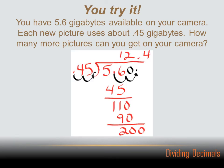You have 5.6 gigabytes available on your camera. Each new picture uses about .45 gigabytes. How many more pictures can you get on your camera? Well, we've got a total of 5.6 gigabytes available, and we need to divide that by the size of each new picture, which is .45 gigabytes. Now that we've set the math problem up, we've got to move the decimal point on the divisor so that the divisor is a whole number.